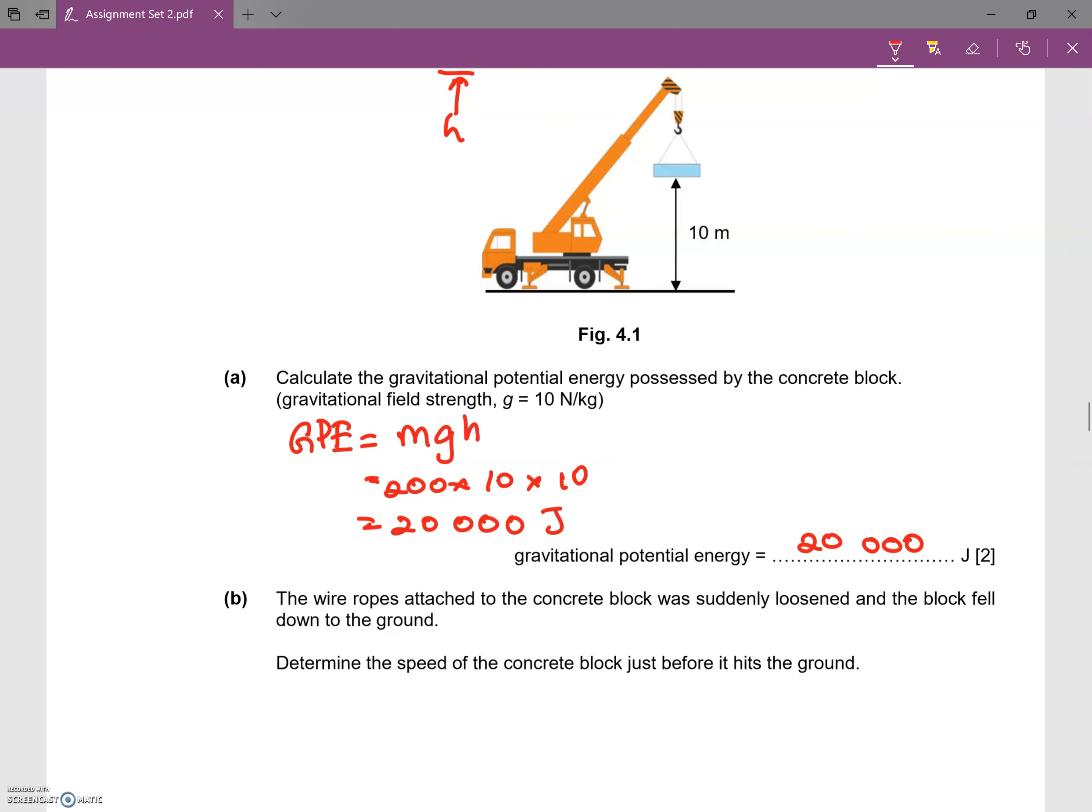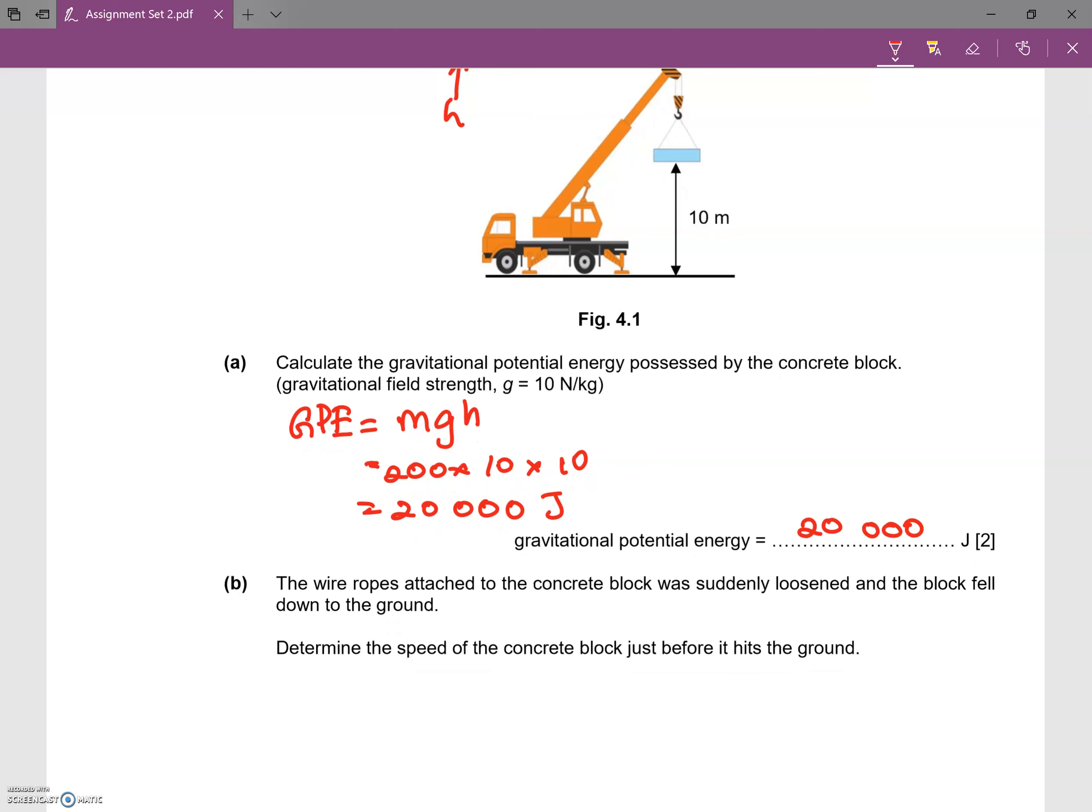Now, they say the wire ropes attached to the concrete block were suddenly loosened and the block fell down to the ground. Determine the speed of the concrete block just before it hits the ground. So as the block moves down, it will accelerate down, and just before it reaches the ground...